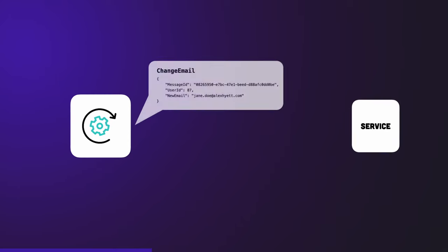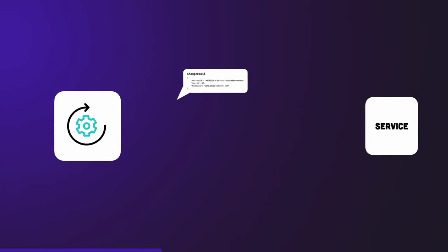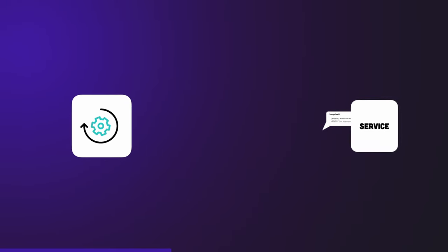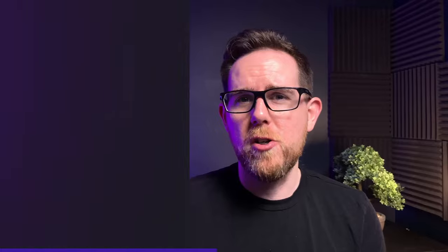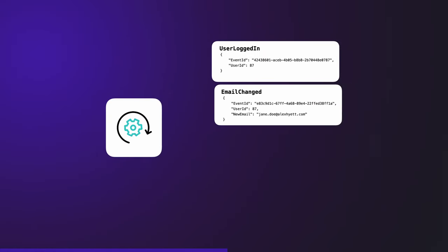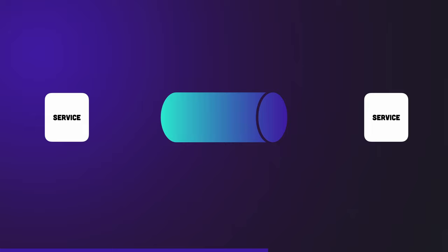The events themselves are slightly different to messages as well. A message is usually a command to do something — it is designed for a particular service with instructions on what needs to be done. This could be sending an email, for example, or running some other back-end process. With an event there's not usually any instructions; it's just information on what has been performed and by who. The way that events are handled are slightly different too — with messages, once the message has been processed it's deleted from the queue ready for the next message.